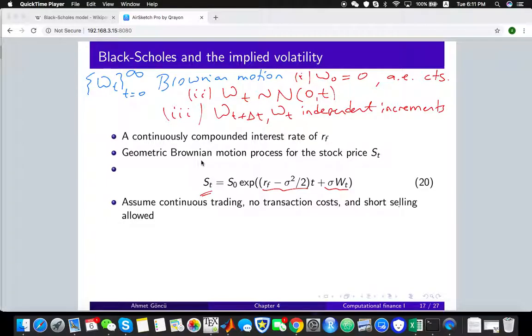If you take the difference of these increments, you will have a normal distribution with the mean zero and the variance equals to the difference in time which is delta t. These properties are important because using these properties we can simulate some realizations of this Brownian motion.